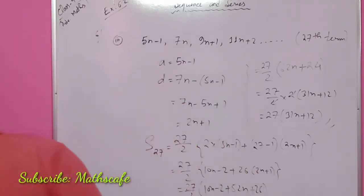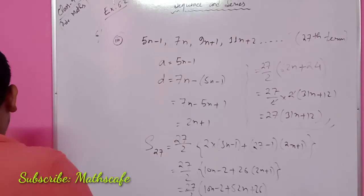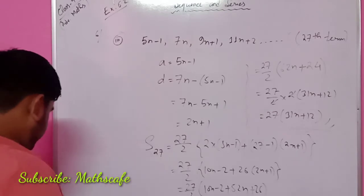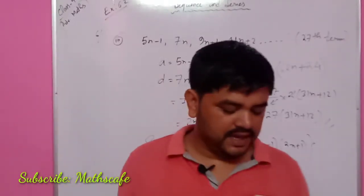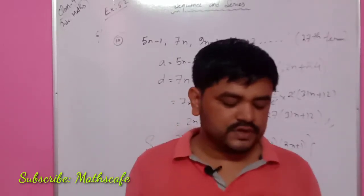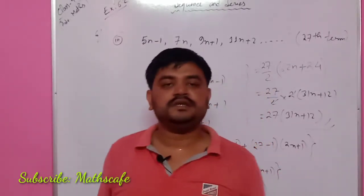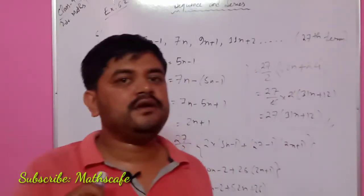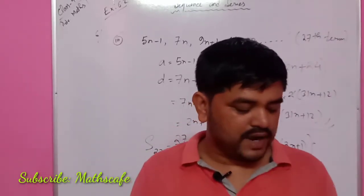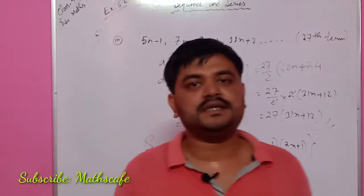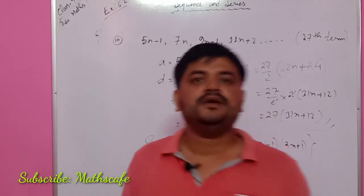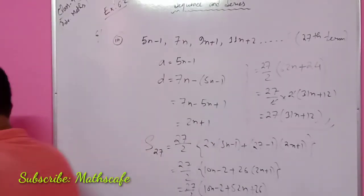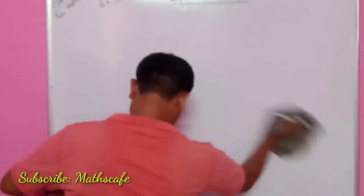So next question number starts with 7. Question number 7: if A, B, C are in AP, then the following terms are also in AP. If A, B, C are in AP, then what do we have to prove? So the road can be checked. We are going to say that questions 1 and 2 over number 6. So A, B, C are in A, P.